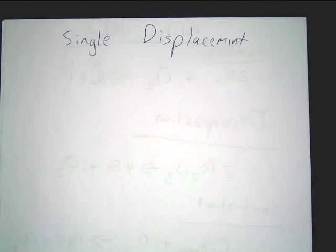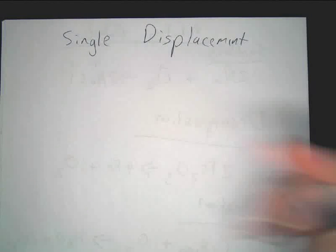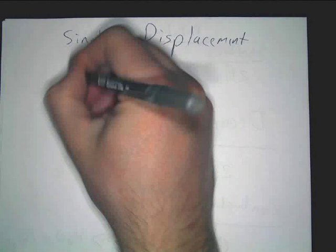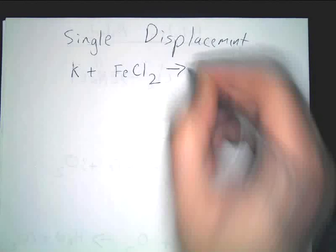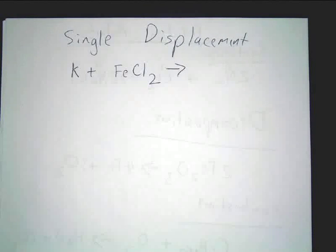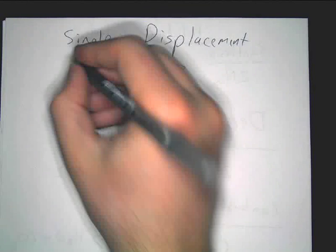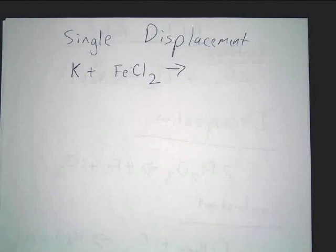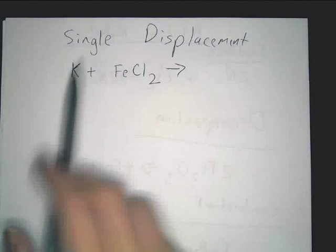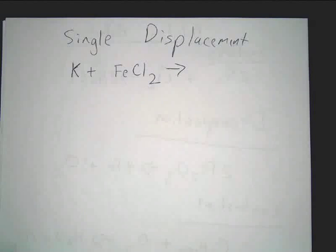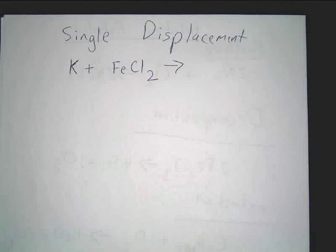Single displacement. You just got the activity series passed out to you. For right now, let's look at an obvious single displacement reaction. We're going to say we've got potassium plus iron chloride. You should be able to recognize it as a single displacement reaction — one element reacting with an ionic compound. It's obviously single displacement.